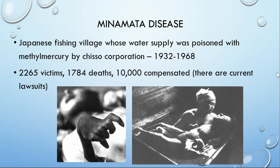The most famous case of mercury poisoning — sometimes called Minamata disease — occurred in a Japanese fishing village called Minamata. A company unintentionally dumped methylmercury into the water supply from the 1930s to the 1960s. There are still lawsuits going on in Japan right now because of all the damage done to people.